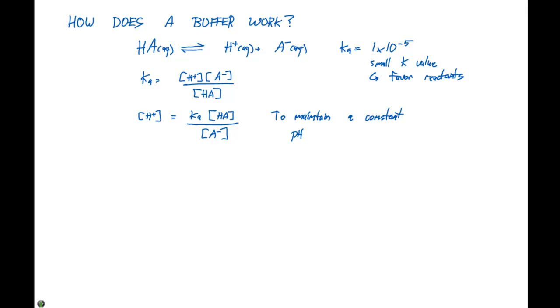...we want the change in the concentration of HA divided by A minus to be very, very small. So the ratio of HA to A minus, we want to be as close to one as possible. So let's look at two scenarios here. The first scenario would be to add a strong acid.